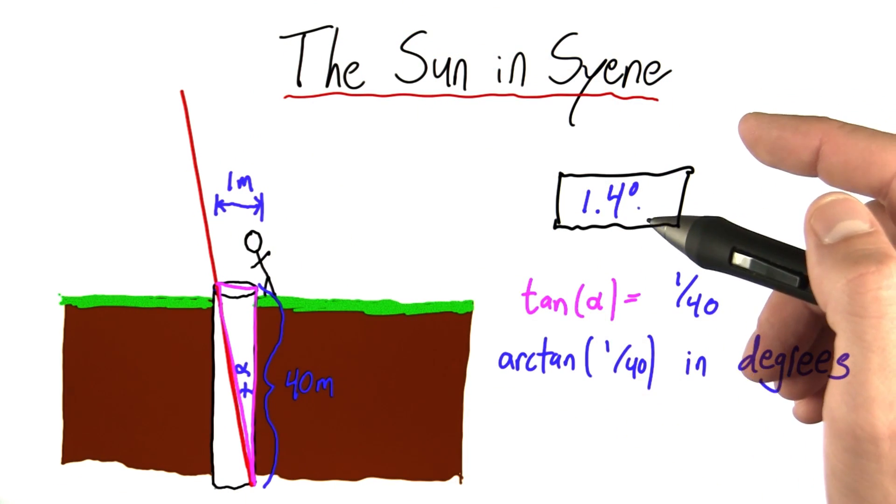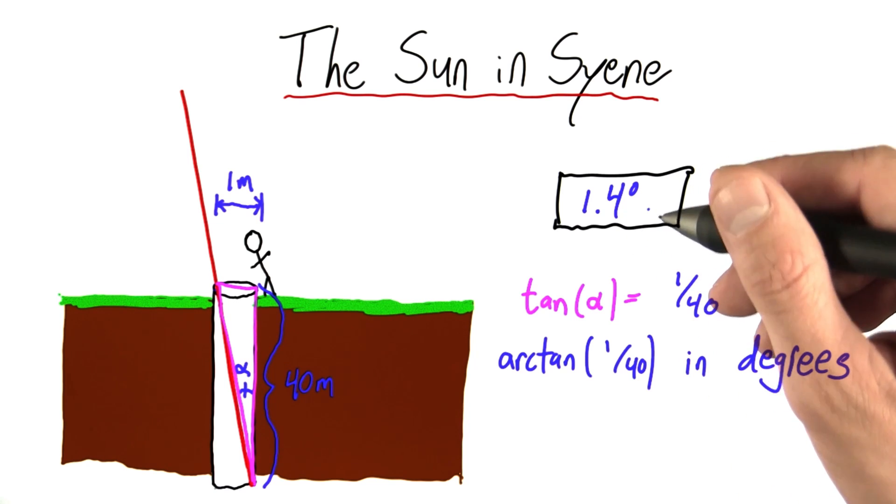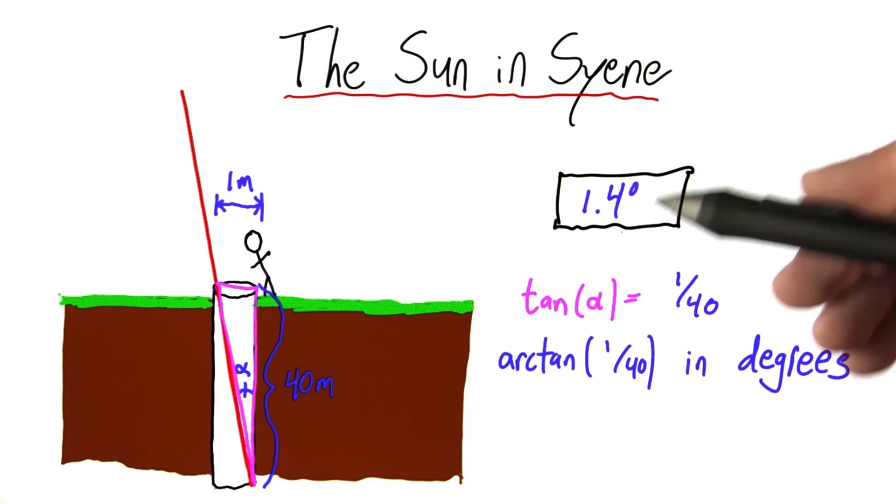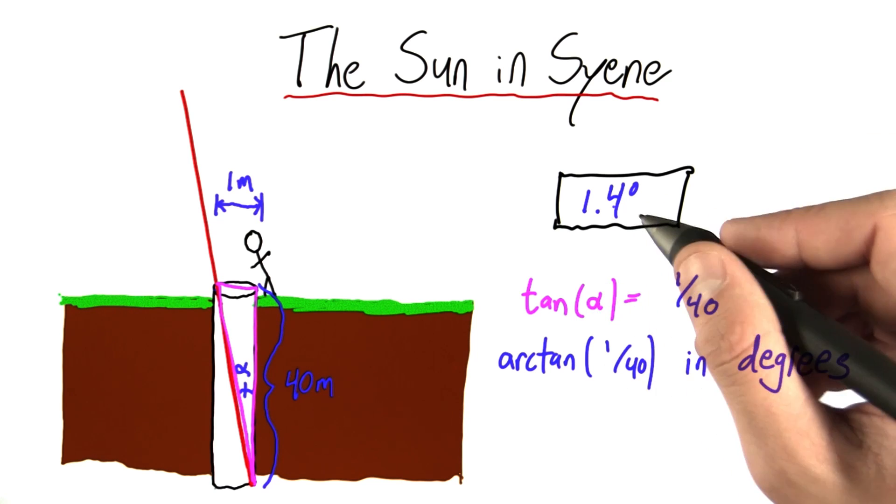That's certainly an appreciable error since the angle we had been dealing with before was only 7.2 degrees. But how does this error in angle correspond to an error in calculated circumference?